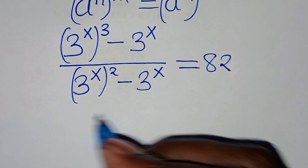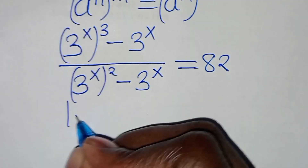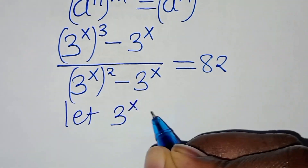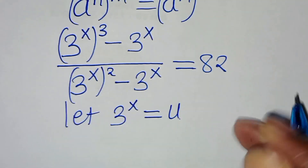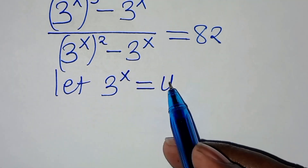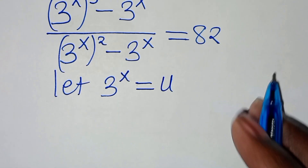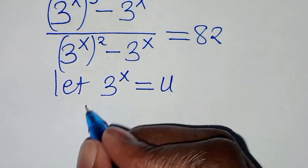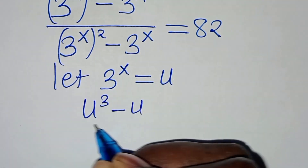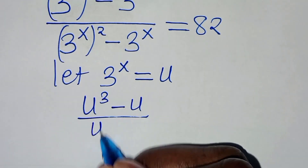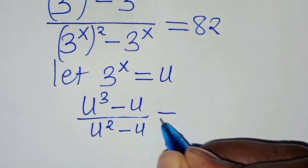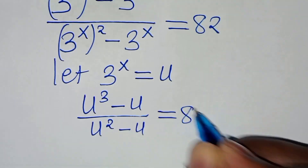The next step: we let 3 to the power of x be equal to u. Substituting into the equation, we get u to the power of 3 minus u, over u to the power of 2 minus u, equal to 82.